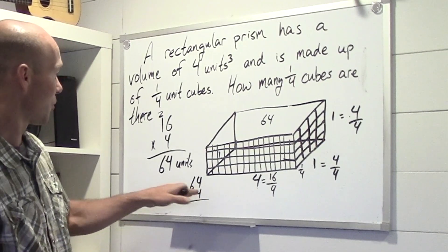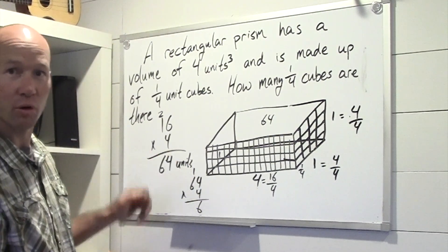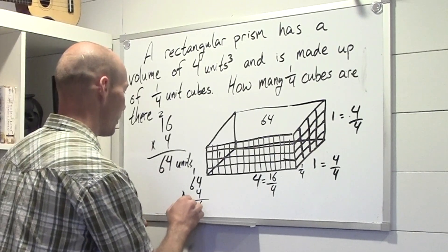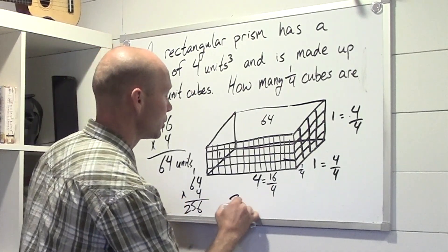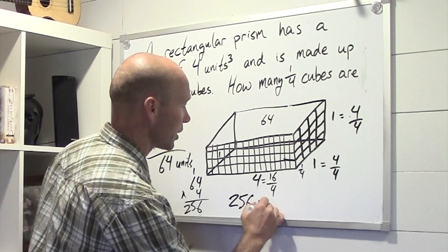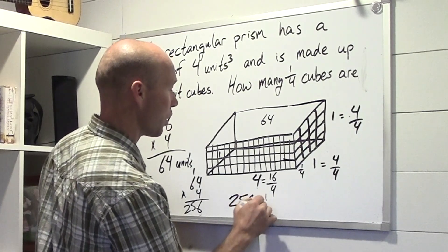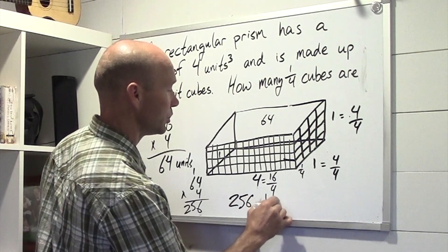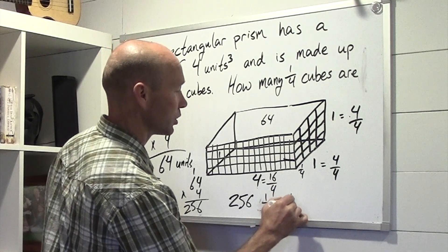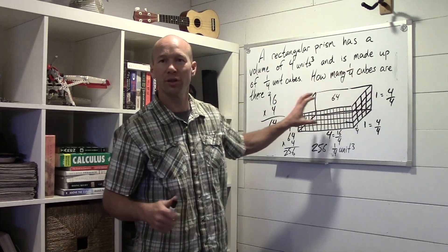What do we get? 4 times 4 is 16. And 6 times 4 is 24, plus 1, 25. So we have 256 unit, sorry, 1/4th unit cubes. 256, 1/4th unit cubes.